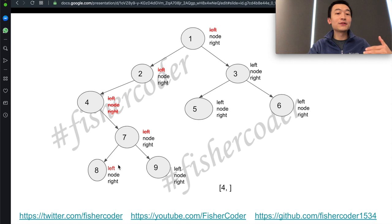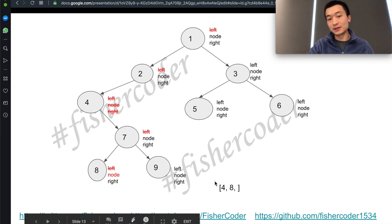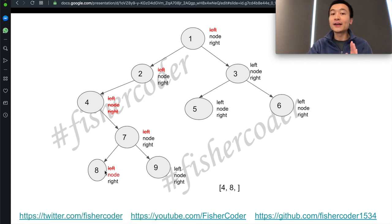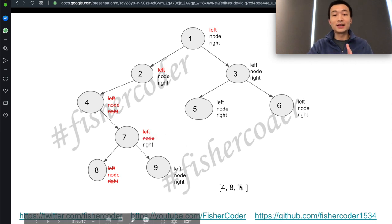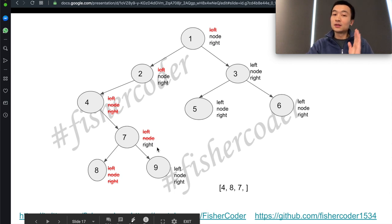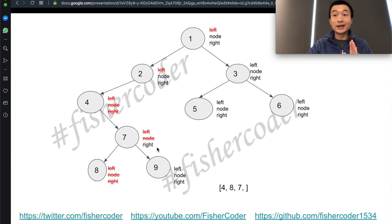We'll attempt to visit the left child of 8 — it doesn't have anything. So we visit node 8 itself and add 8 into the list. Then we'll attempt to visit the right of 8, which doesn't have anything, so we return. We return to node 7 and put 7 into the output — 7 is the node that should be added. Then we continue this order and visit the right child of 7, which is 9.